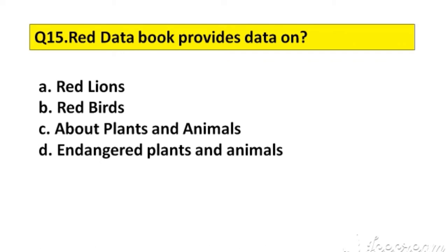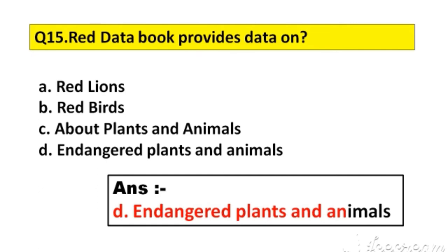Question number 15. Red data book provides data on. Option A: Red lions. B: Red birds. C: About plants and animals. D: Endangered plants and animals. The right answer is option D, Endangered plants and animals.